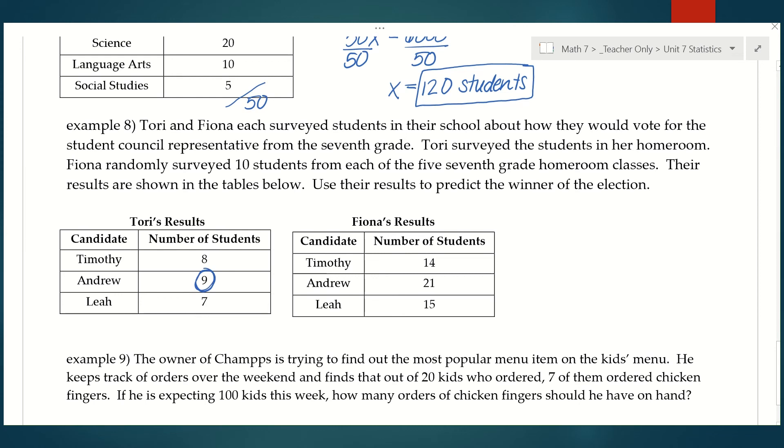And in Fiona's results, the candidate with the highest number of votes was also Andrew. For this question, we really don't have to do any math here because if in both surveys Andrew was the winner, we can assume that he would be the winner. We can assume that that prediction is accurate. There really is no need to do anything more than that.